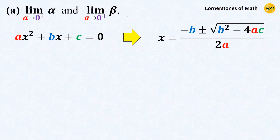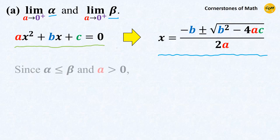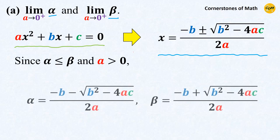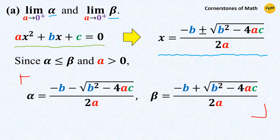Let's start with the first problem where a approaches 0. First, we have to obtain expressions for alpha and beta. From the quadratic formula, we know that this quadratic equation has these roots, and since alpha is the smaller root and beta is the larger root, and since the coefficient a is positive, alpha is the one with the minus sign and beta is the one with the plus sign.